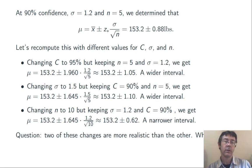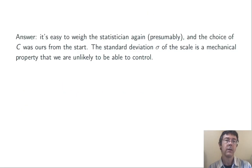One question this raises: two of these changes are very realistic, one of them is not. Can you see which one is less realistic? You might pause the video here. So, it's easy to weigh the statistician extra times, changing n. And the choice of C was ours from the start, so changing the level of confidence is very easy to do. However, the standard deviation σ of the scale is not going to be something that we have control of. So, going back to the three potential changes on that previous slide, only two of them are really potential changes that we could make.